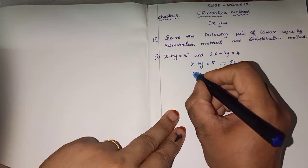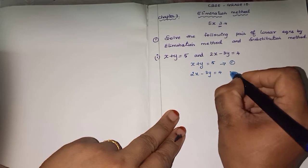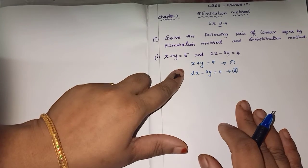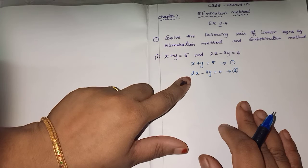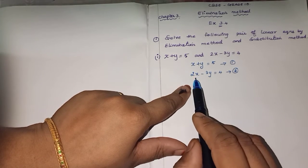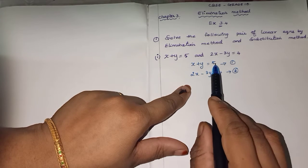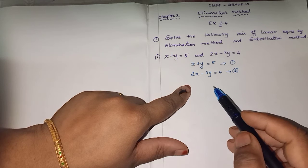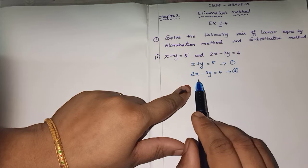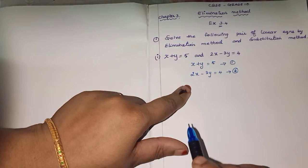First I am marking this equation: x plus y is equal to 5. This I am marking it as number 1. 2x minus 3y is equal to 4. This I am marking it as number 2. You can add or check to eliminate.